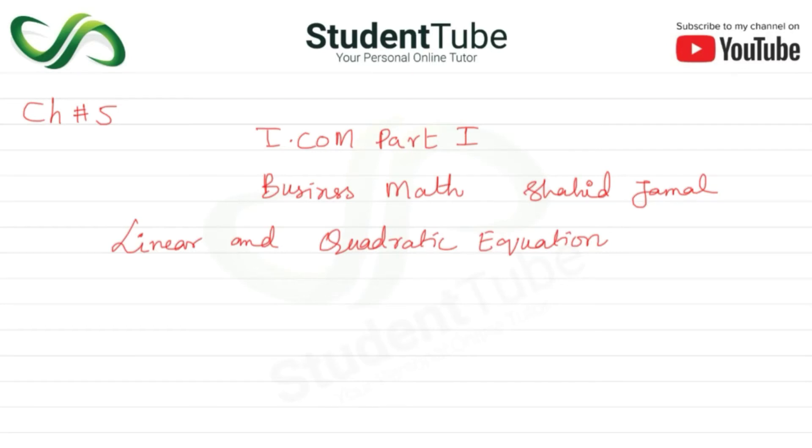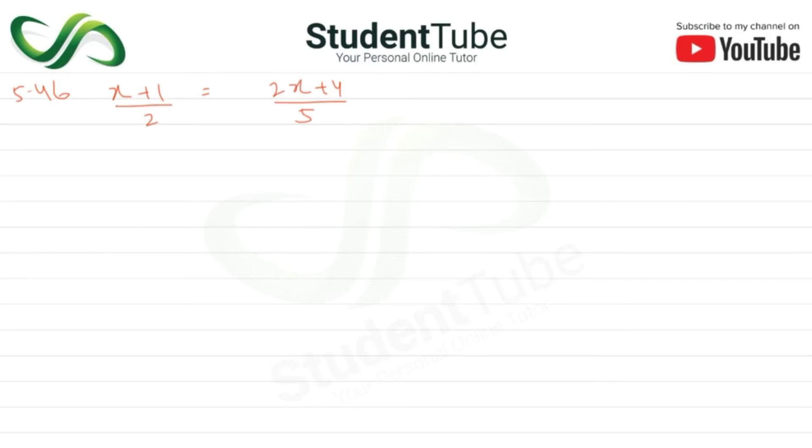Assalamu alaikum, welcome to Student Tube. In this lecture, Chapter 5, Part 1, Business Math. The chapter is linear and quadratic equations. Question 5.46: (x+1)/2 = (2x+4)/5.